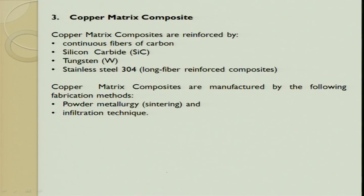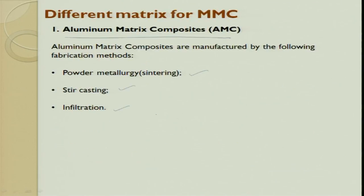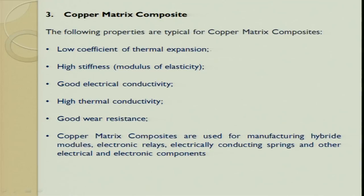Copper metal matrix composites use continuous fibers of carbon, SiC, tungsten, or stainless steel as reinforcement. The process for making copper MMC is powder metallurgy and infiltration. Properties include low coefficient of thermal expansion, high stiffness, good electrical conductivity, high thermal conductivity, and good wear resistance. Note: density is not highlighted because copper density is inherently high.